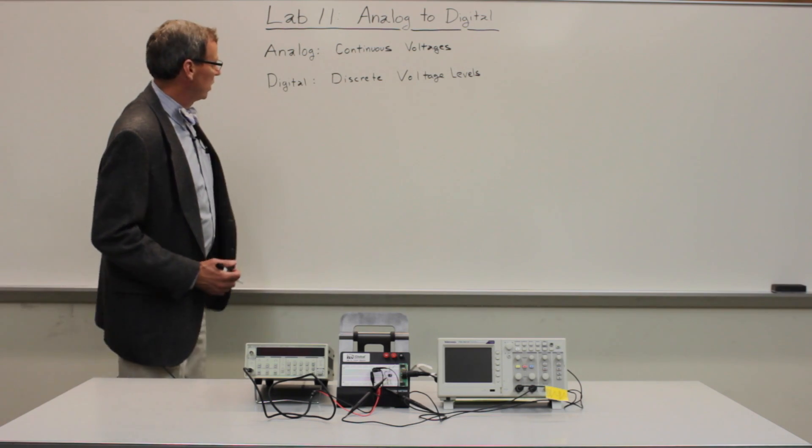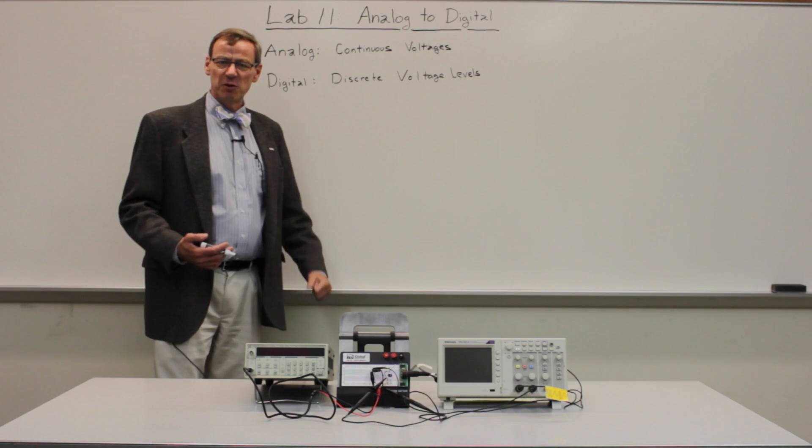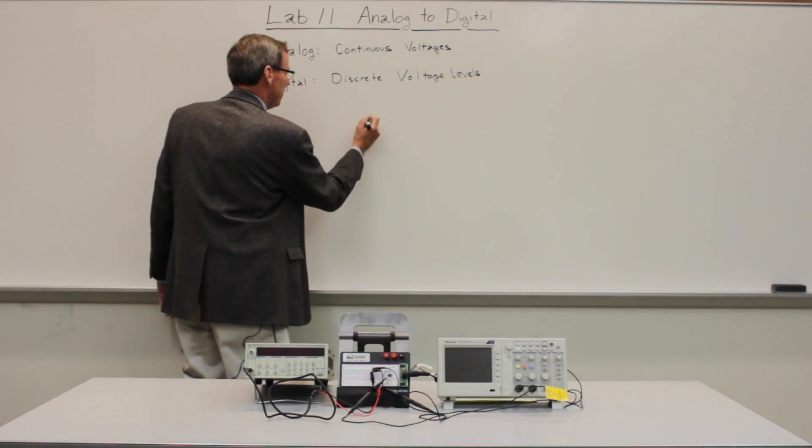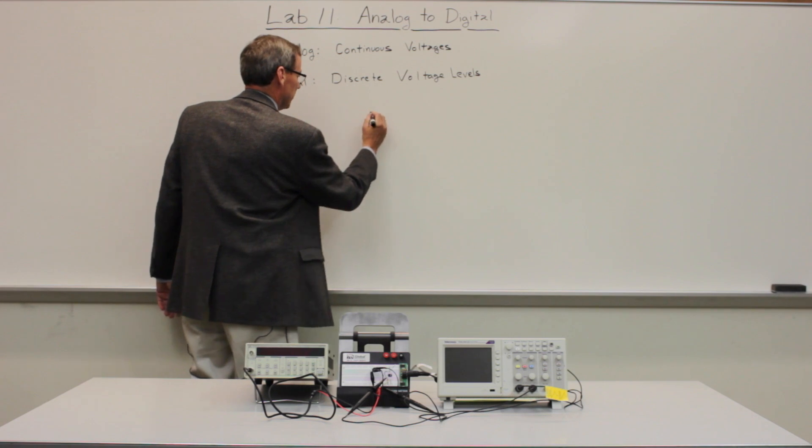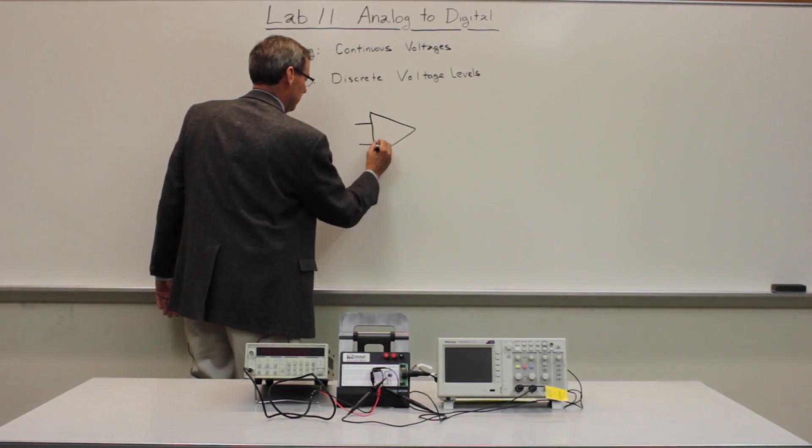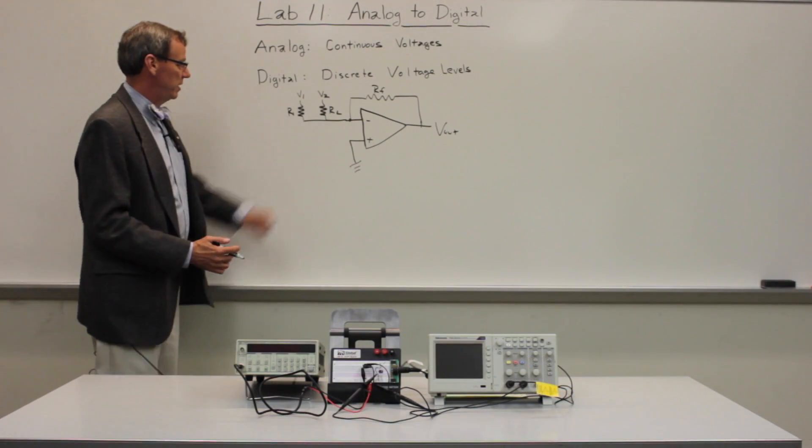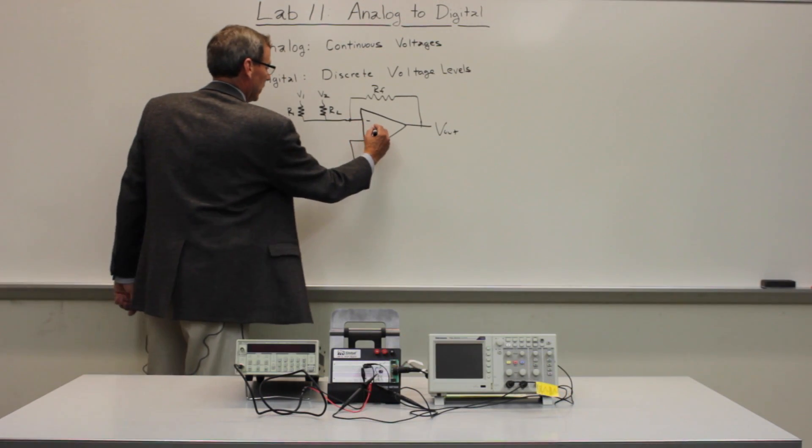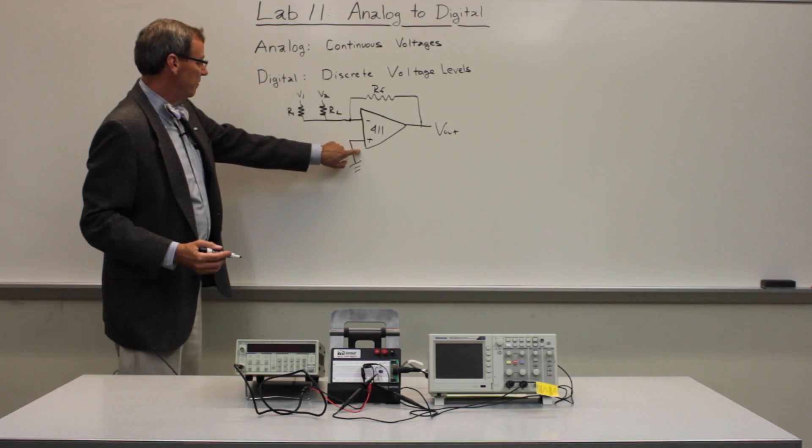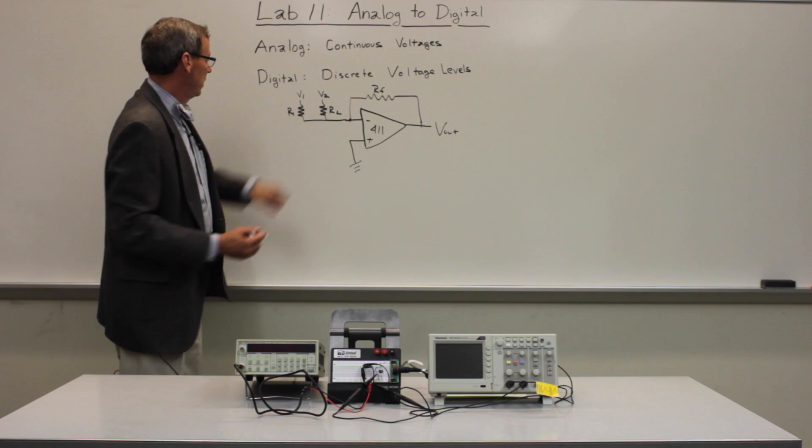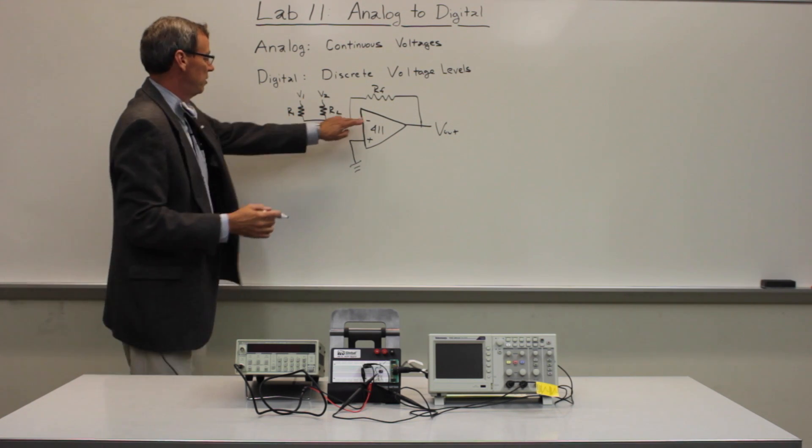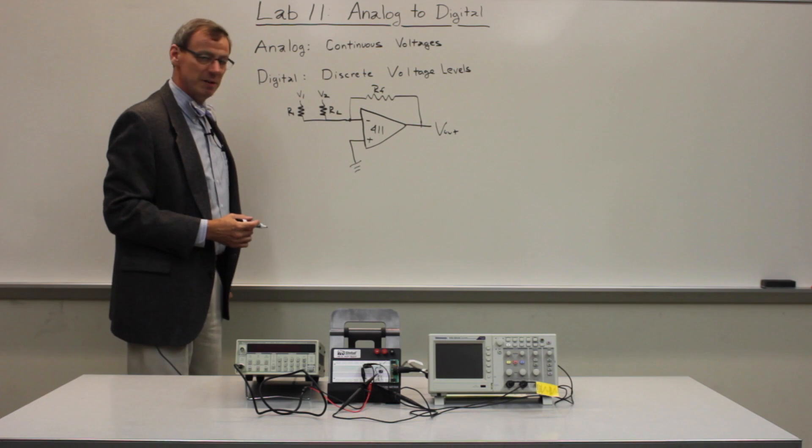We're going to be looking at several circuits here. The first one is a so-called adder circuit, and we'll put that on the board here. It works based on our op amp input. The adder circuit is based on the 411 op amp, and we have the non-inverting input grounded, and we have two voltages V1 and V2 through resistors R1 and R2 going into the inverting input, and then a feedback.